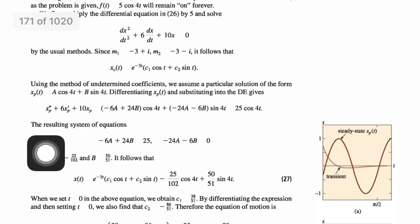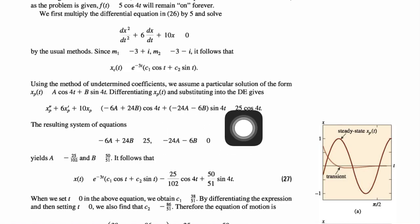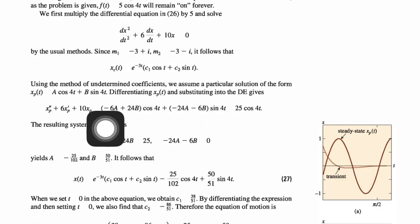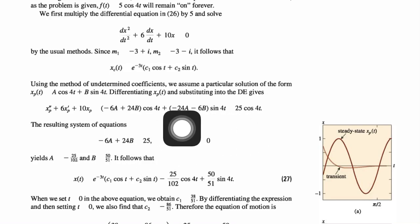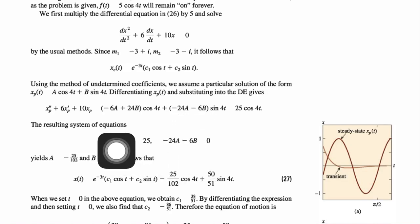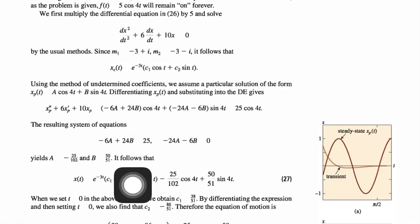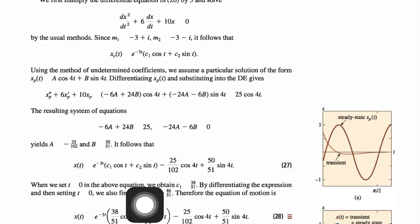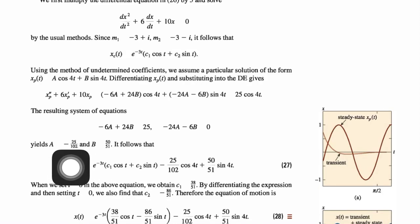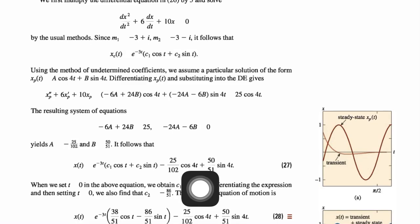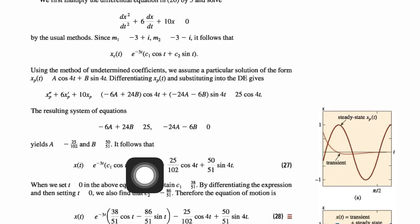Comparing both sides gives two equations: −6A + 24B = 25 and −24A − 6B = 0. Solving these two equations, I get the values of A and B. Substituting these values gives the particular solution: xp(t) = (−25/102)cos(4t) + (50/51)sin(4t). Combined with the complementary solution, this gives the general equation of motion.